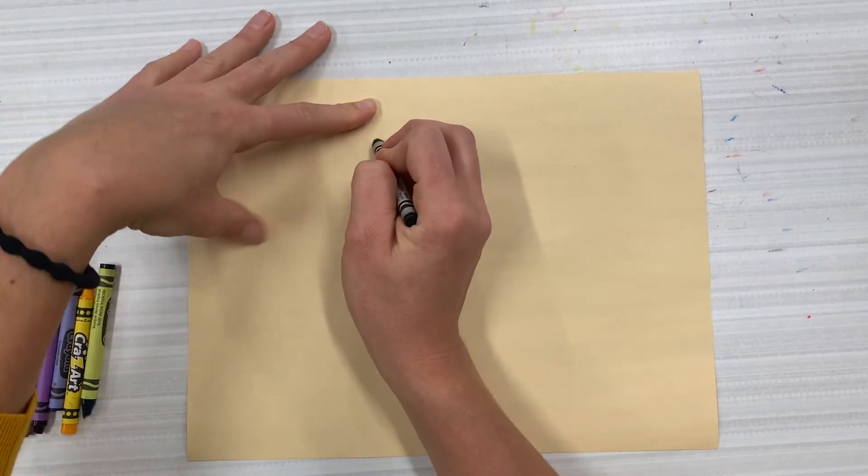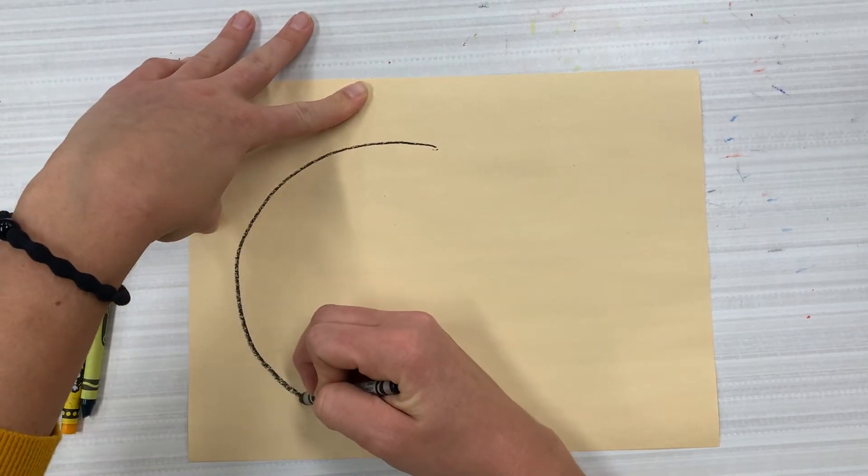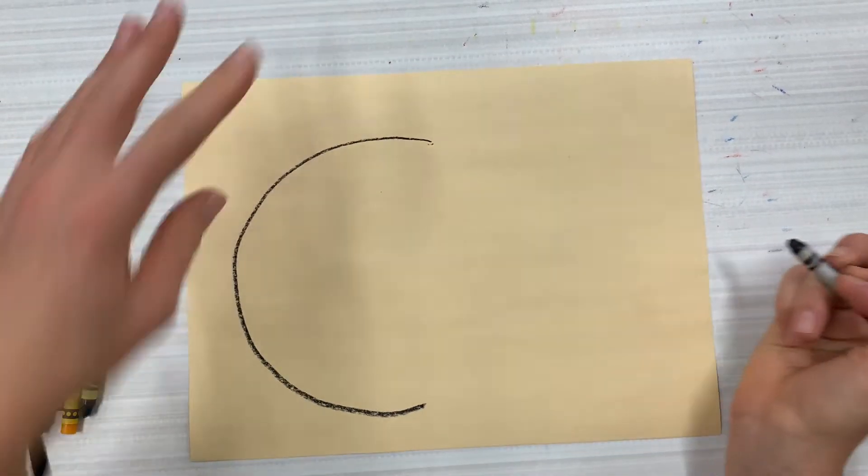This is very helpful. Then I'm going to draw that curved line so it kind of looks like a C.